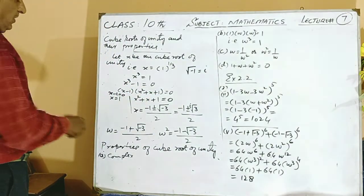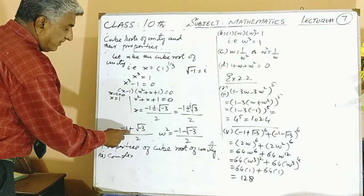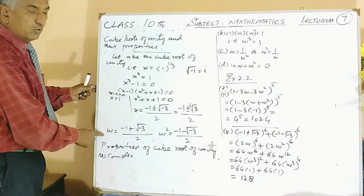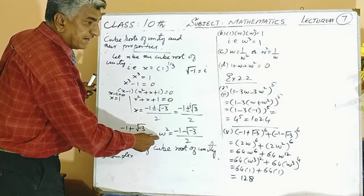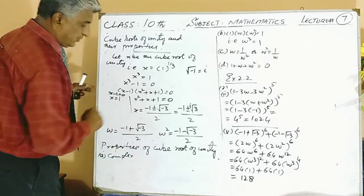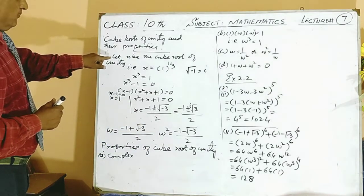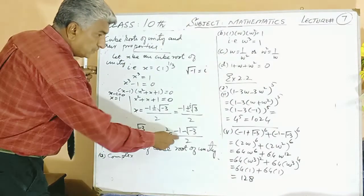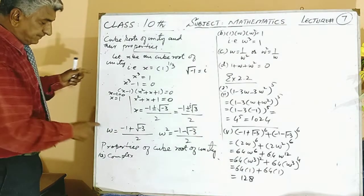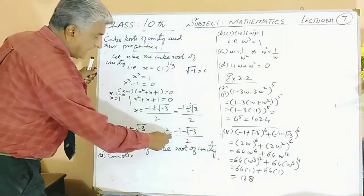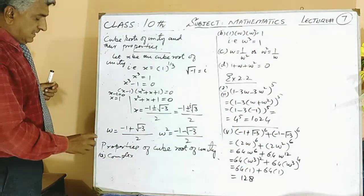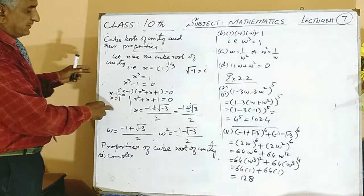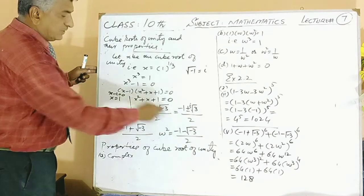So we got these two values — one with positive sign and one with negative sign. The one with positive sign is called omega, and the other is omega square. So we have found the two roots of unity: 1 and these two. Omega and omega square are the complex cube roots of unity, so these are the three cube roots of unity.